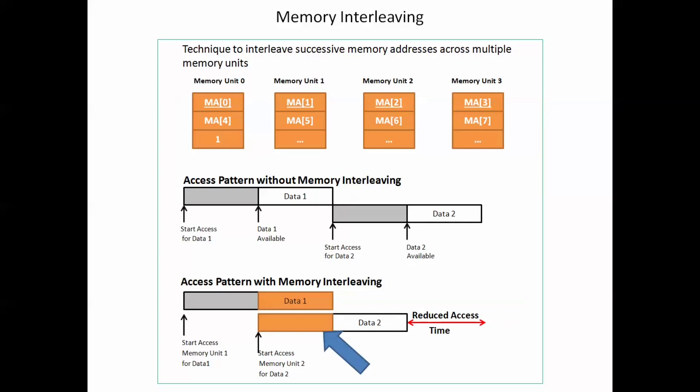So when the first memory unit is sending data to the CPU, the second unit will receive the address from CPU. Similarly, when the second unit sends data, the first unit can be accessed again. As a result, the delay between accessing subsequent words is reduced considerably.